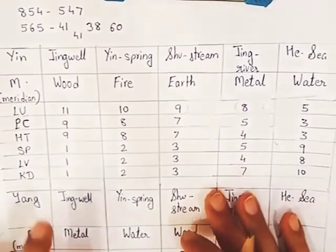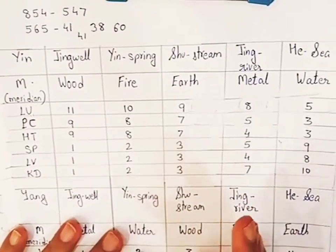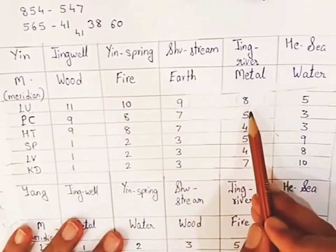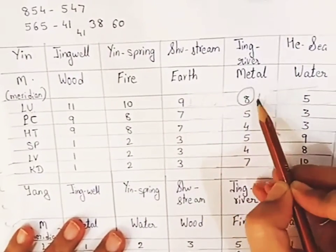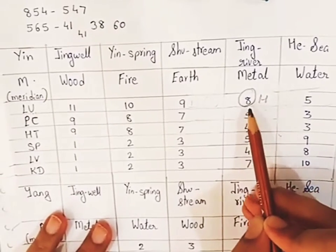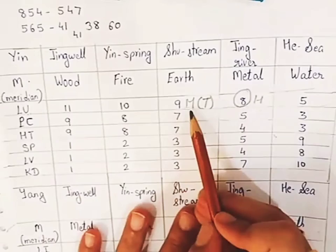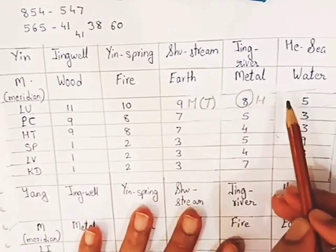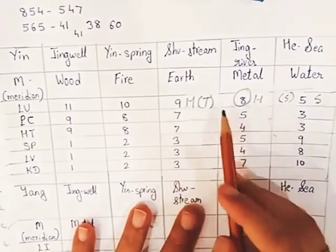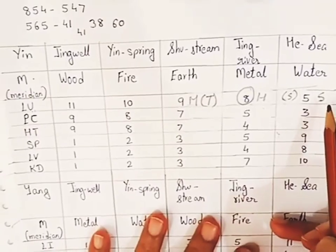In this chart, we have all 12 meridian names and we are going to find the element point of each meridian. Once we find the element point, we can find the mother and son point. For example, the lung meridian — the element is metal, so the metal point of the lung meridian, lung 8, is the horary point. The self point or element point of the meridian is called the horary point. When you go one step previous, you find the mother point or tonification point — lung 9. When you go next, you find the son point or sedation point — lung 5.